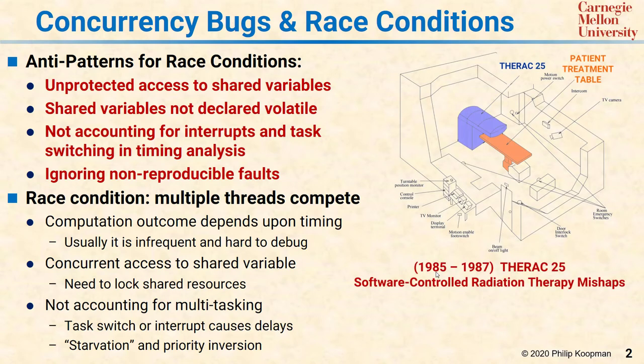A classic case of problems with race conditions was the THERAC-25 back in the 1980s. This is a software-controlled radiation therapy machine, and radiation was used to treat cancer. There were a number of patient overdoses that resulted in some fatalities.